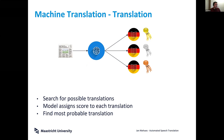The model says: based on what I've learned, I think this is a better translation and this one is not so good. We always search for the most probable translation. This is the basic concept. Now I want to look a little more closely at both steps — the data and the model.